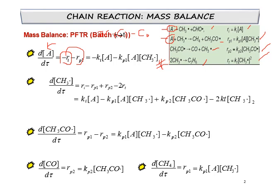In initiation it is a product, so it is positive R_I. In propagation one it is a reactant, so it is negative R_P1. In propagation two it is a product again, so it is positive R_P2. In termination, it is a reactant — specifically 2CH3 radical — so we put it as negative 2R_T. Substitute all the respective rate laws accordingly.